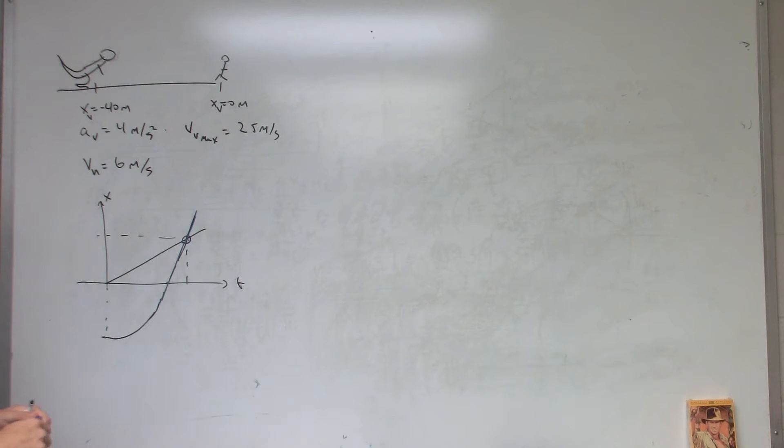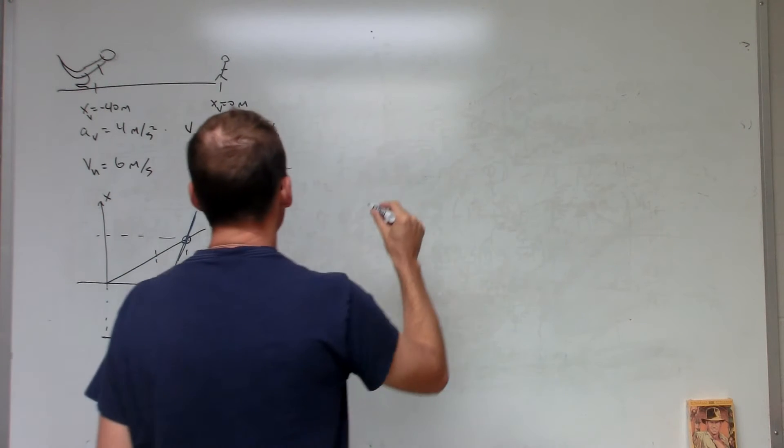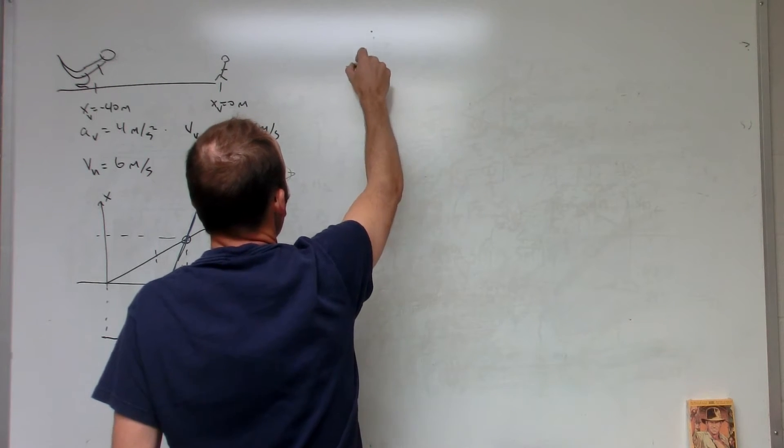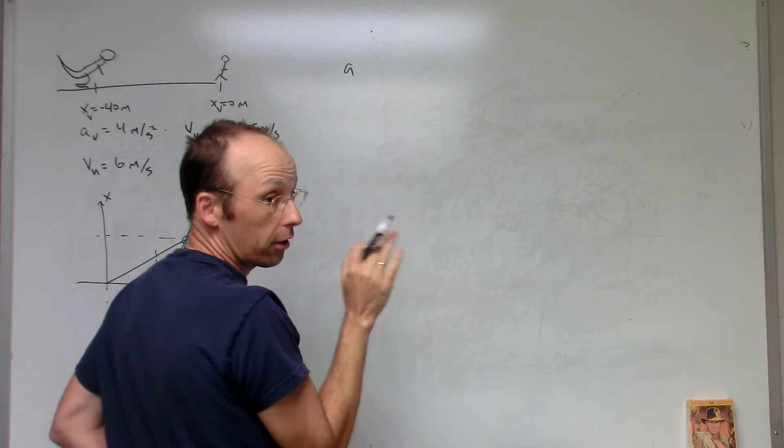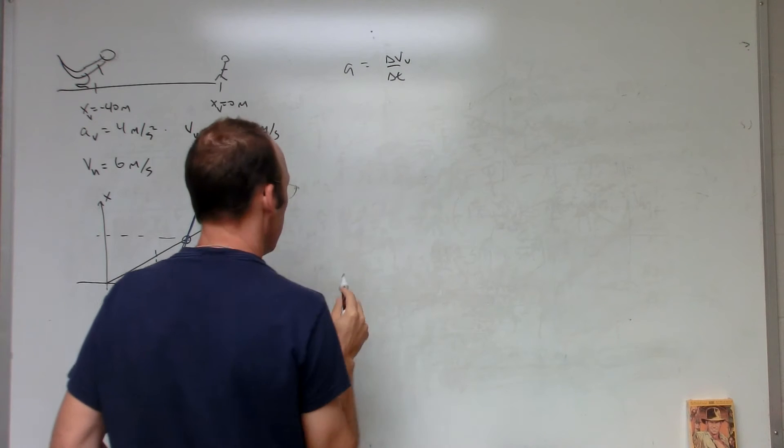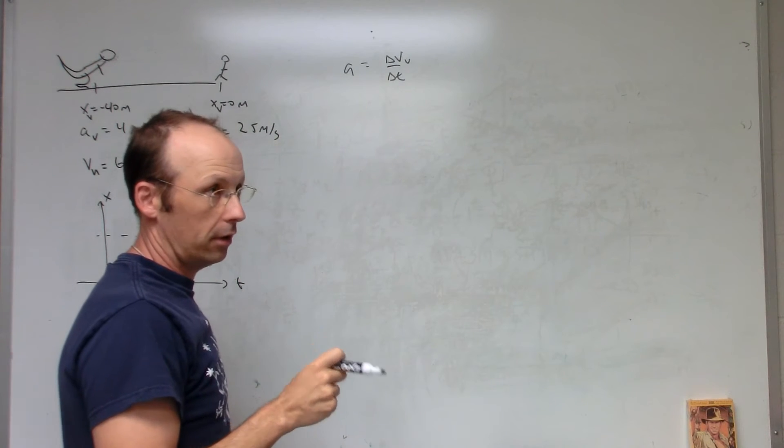I'm going to do this in two parts since I don't know the answer. Part one I have a constant velocity human and an accelerating Velociraptor up to 25 meters per second, and then part two they're both moving at constant speed. Let's find out the position and velocity of the Velociraptor once it reaches that speed.